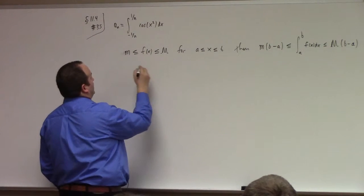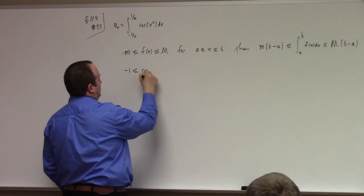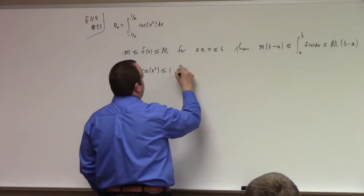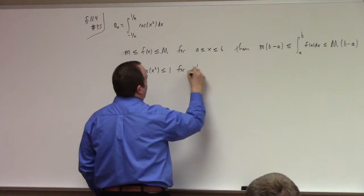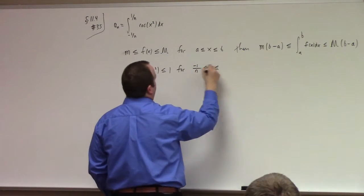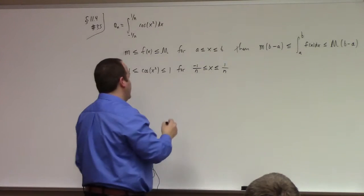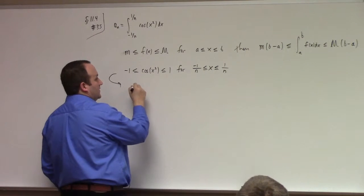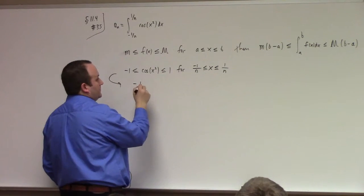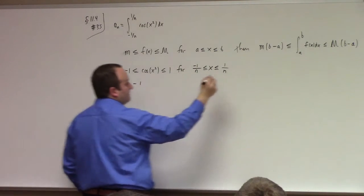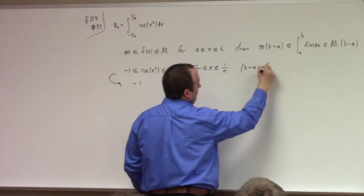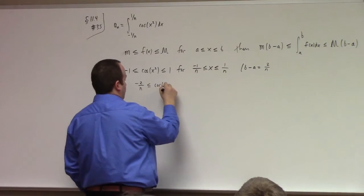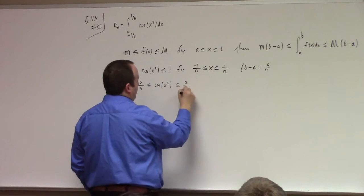However, if I want to give a justification for that, I guess what I might do, right? Remember this rule, guys? If I have little m less than or equal to f of x, less than or equal to big M, for a less than or equal to x less than or equal to b, then one of the properties of the definite integrals is m times b minus a less than or equal to the integral from a to b of f of x dx less than or equal to...